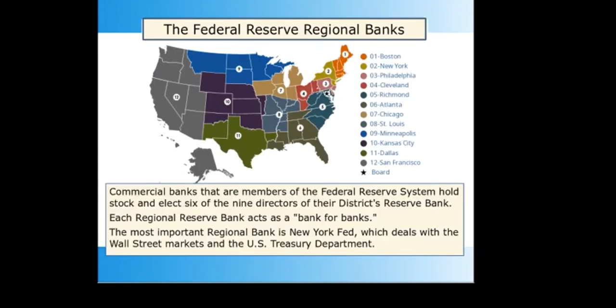Commercial banks that are members of the Federal Reserve System hold stock and elect six of the nine directors in their district's reserve bank. Each regional reserve bank acts as a bank for banks. The most important is the New York Fed, which deals with the Wall Street markets and the US Treasury Department. Despite the platitudes about serving the public interest, the Federal Reserve System is controlled by member banks and operates for the member banks' benefit. I regard the Federal Reserve System as a banking cartel — an association intended to eliminate competition and assure mutual advantage.